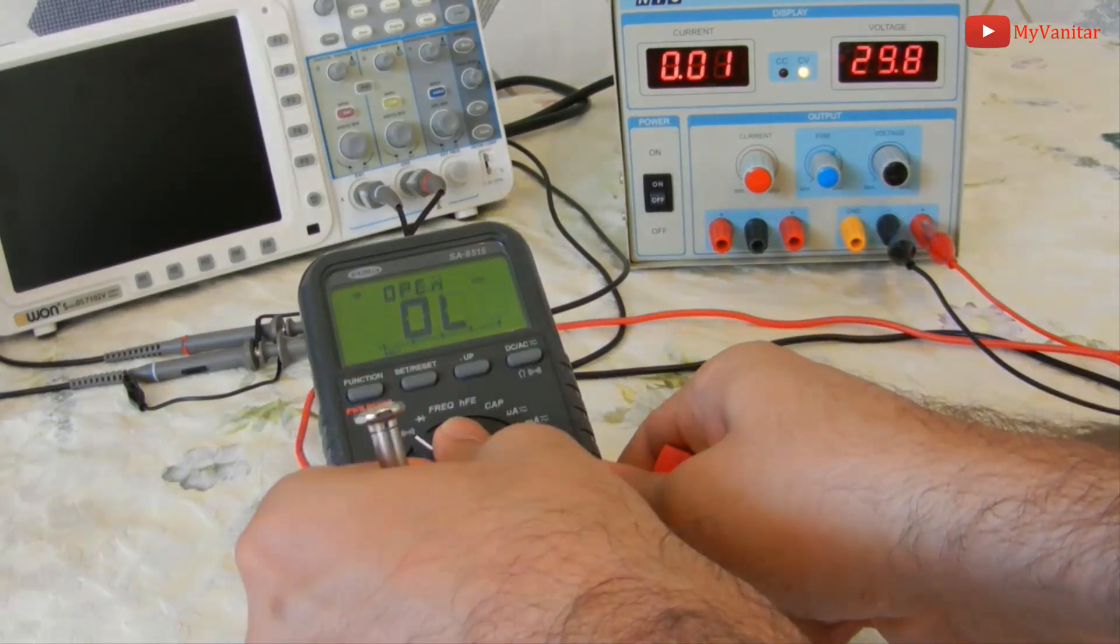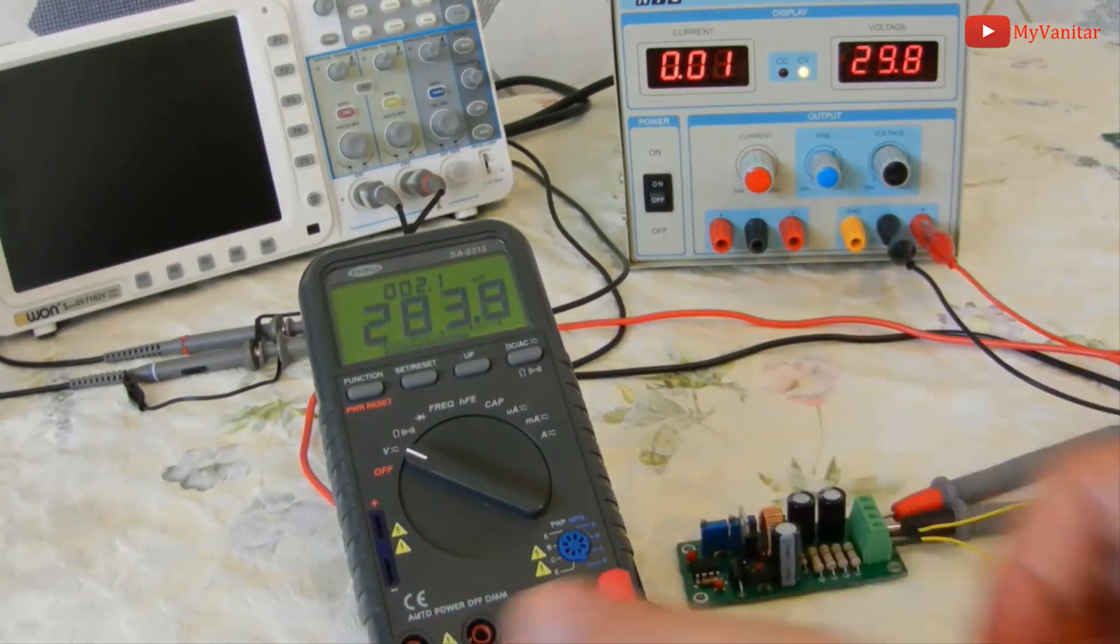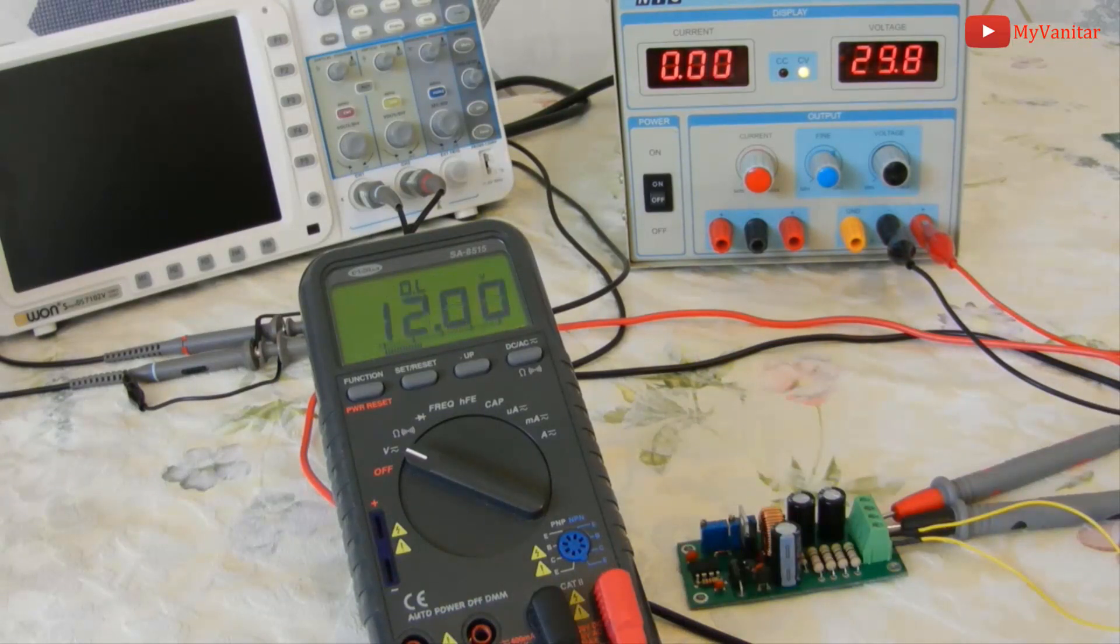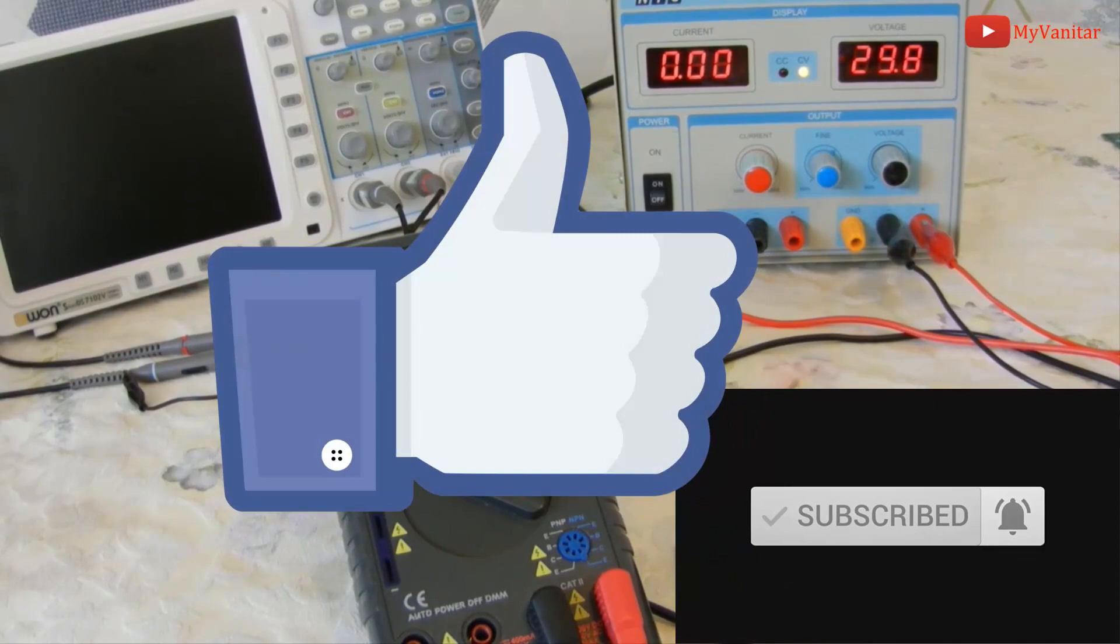Now I set the multimeter for the DC measurement again. It's correct. Okay, that's it. I hope you like this video. Don't forget to subscribe and give me a big like. Catch you next time.